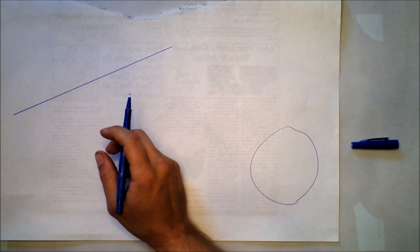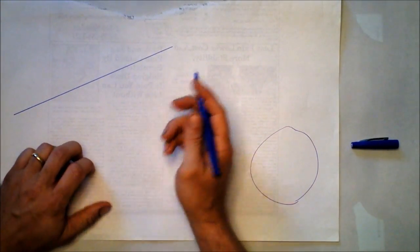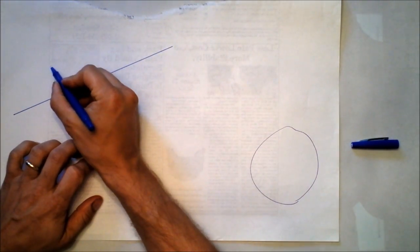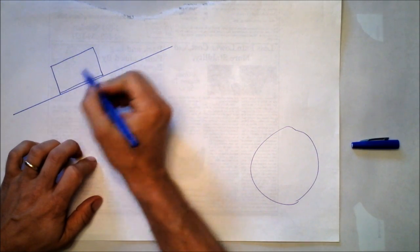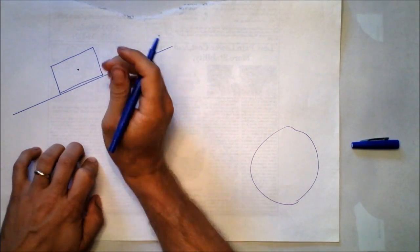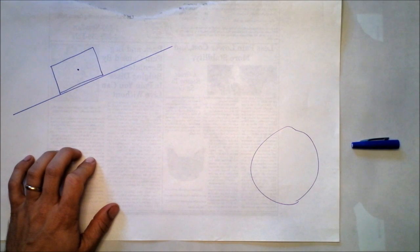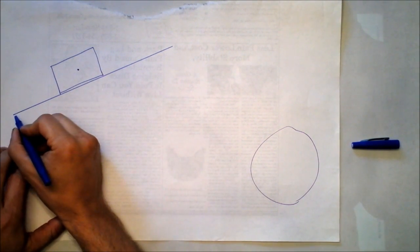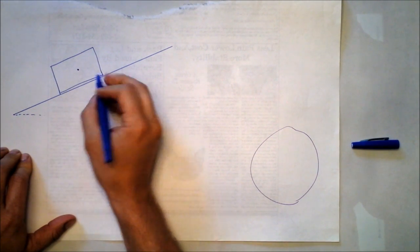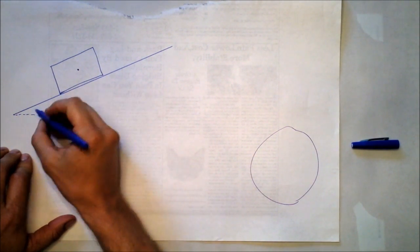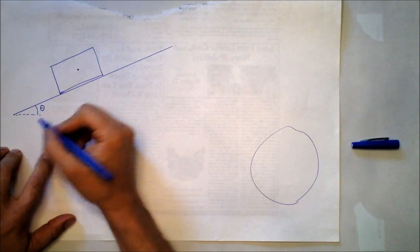Some of my favorite physics problems are the ones that are the simplest to set up. This one in particular, there's a Salvador Dali painting that's placed on a ramp, and it slides with no acceleration. What is the coefficient of friction between Salvador Dali's famous painting and the ramp, if this angle is theta?